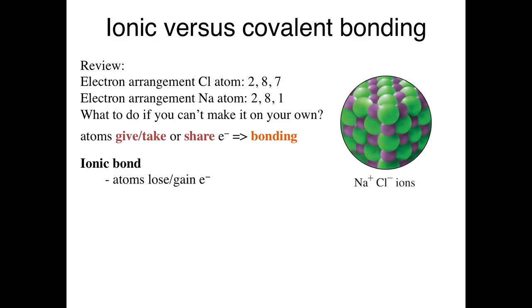The other strategy to achieving a full octet results in something called a covalent bond. And this strategy involves sharing electrons. A prime example is when chlorine and chlorine combine together and sharing electrons to make chlorine gas. We will discuss in detail covalent bonds in the next lecture. And so for this lecture, we will focus on ionic bonding only.